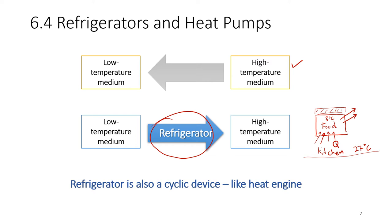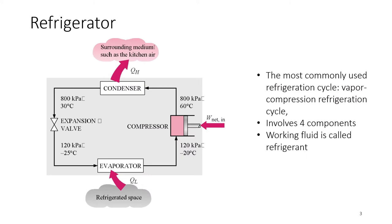What you're seeing here is the most commonly used refrigeration cycle — it's called the vapor compression refrigeration cycle. It has four components, and the working fluid is called refrigerant. Just like before in the heat engine we looked at the steam power plant where the working fluid was steam, here the working fluid is called refrigerant — just like in an aircon system.